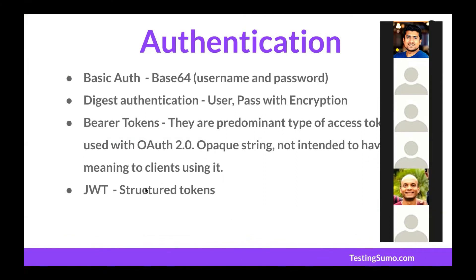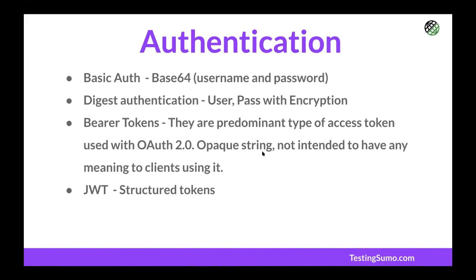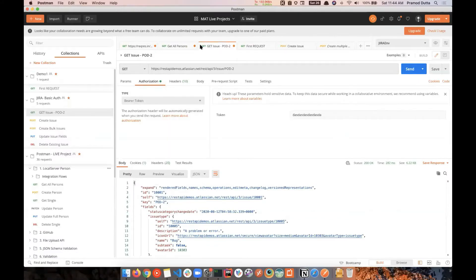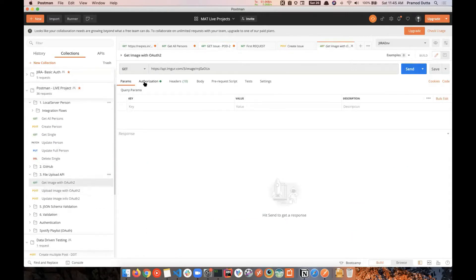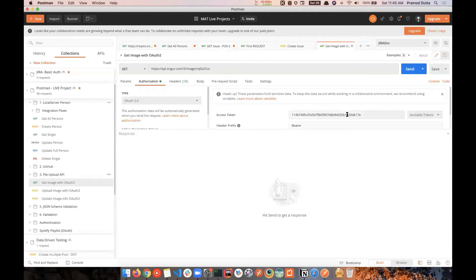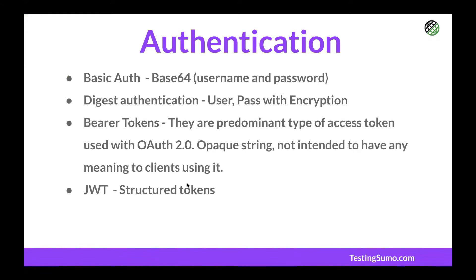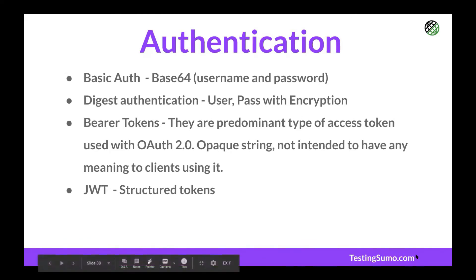JWT — JavaScript Web Tokens — are structured tokens. They appear as a long random string. In the case of JWT, the server can understand what the username and password are from that structured token. Rather than sending username and password directly, the server provides you a token instead. That's how JWT-based authentication works.